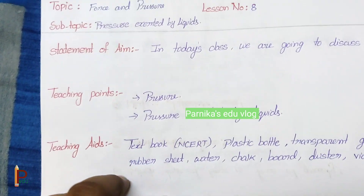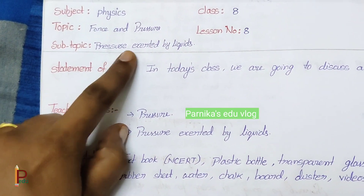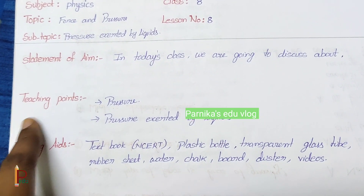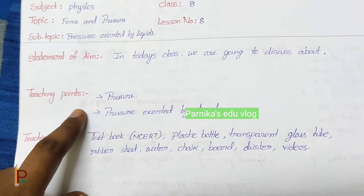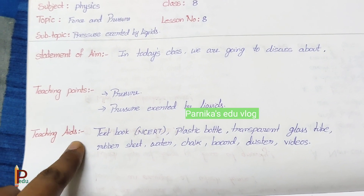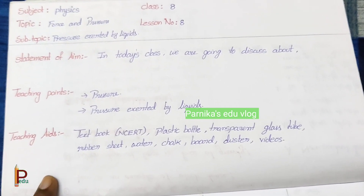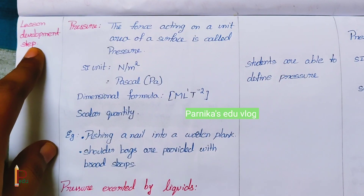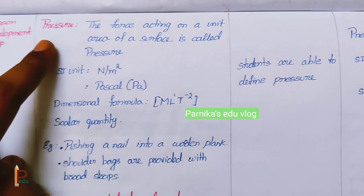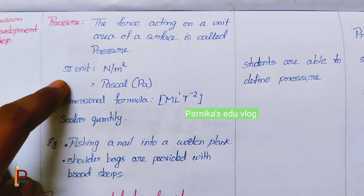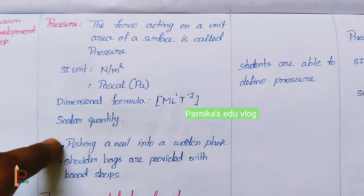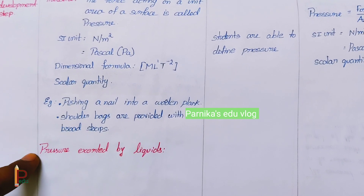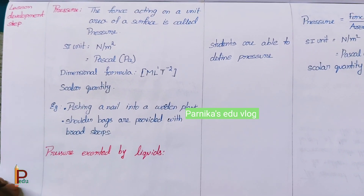And our next topic is Pressure Exerted by Liquids. First one is statement of aim, teaching points, and teaching aids. Lesson development step — here we first discuss the definition of pressure, its SI unit, dimensional formula, and what type of quantity it is, along with day-to-day examples. And next one is pressure exerted by liquids.